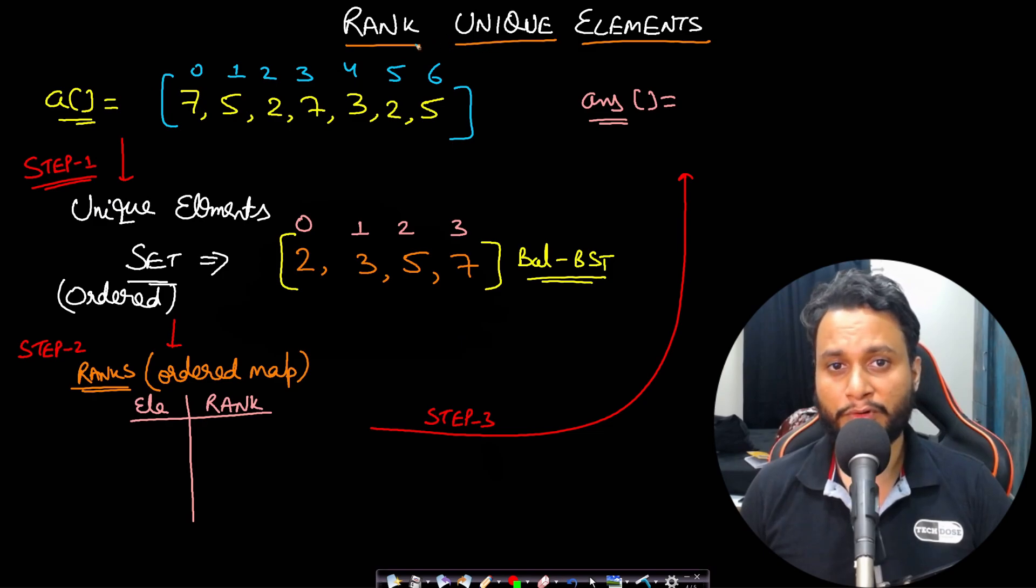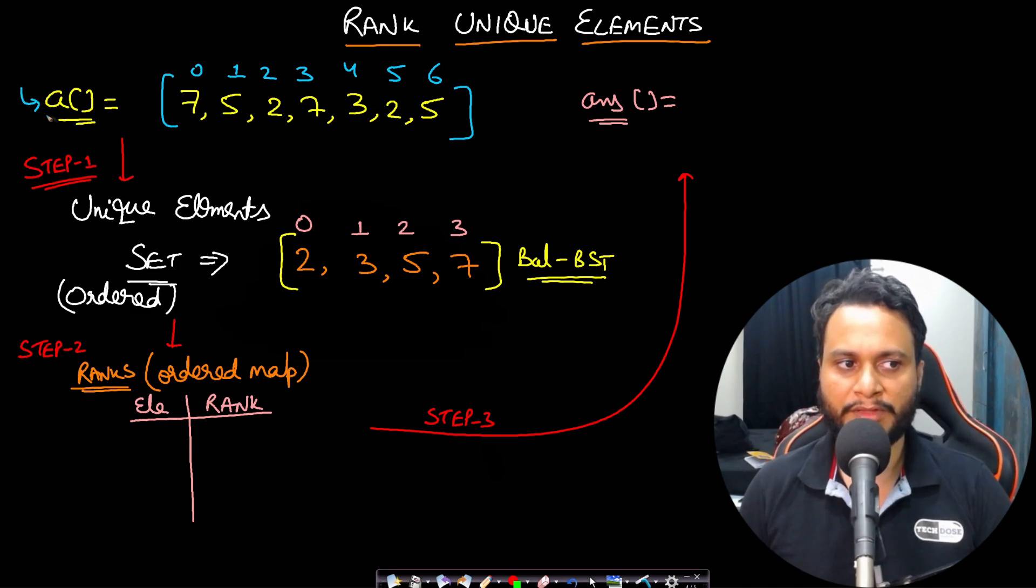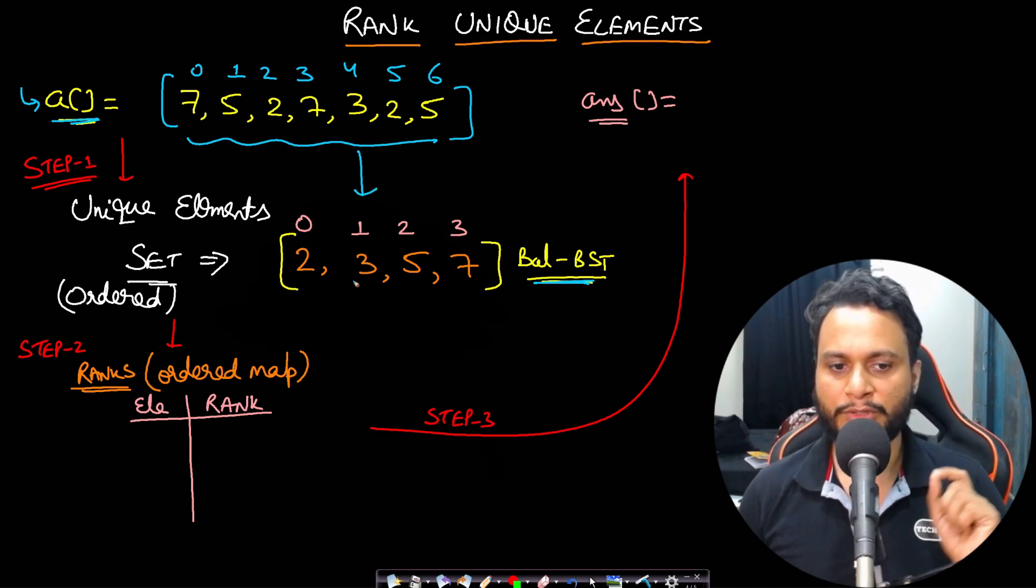Let's consider a dry run where we want to maintain the rank of the unique elements. So this is basically a three step process. In the first step, we are given the input array and from here, we will be building the unique element set.